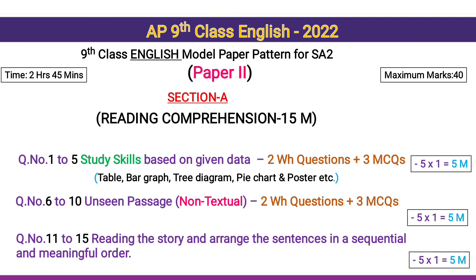Questions 6 to 10 are from an unseen, non-textual passage — 2 WH questions and 3 MCQs, 5 ones for 5 marks. Questions 11 to 15 involve reading a story and arranging sentences in sequential and meaningful order, also called scrambled sentences. You just write the numbers in the correct order — no need to write any full sentences. 5 ones for 5 marks.